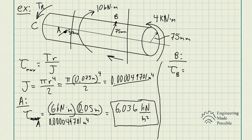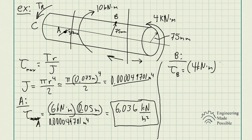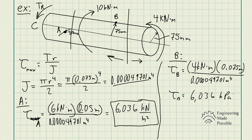Alternatively, you can analyze only the portion from point B to the 4 kN·m end, since that section only experiences the 4 kN·m torque. Just like in statics with internal forces, you can analyze from either side and get the same result. Analyzing from point B toward the right, the torque causing shear stress at B is 4 kN·m. That times the radius 0.075 m, divided by the polar moment of inertia, gives 6,036 kilopascals.